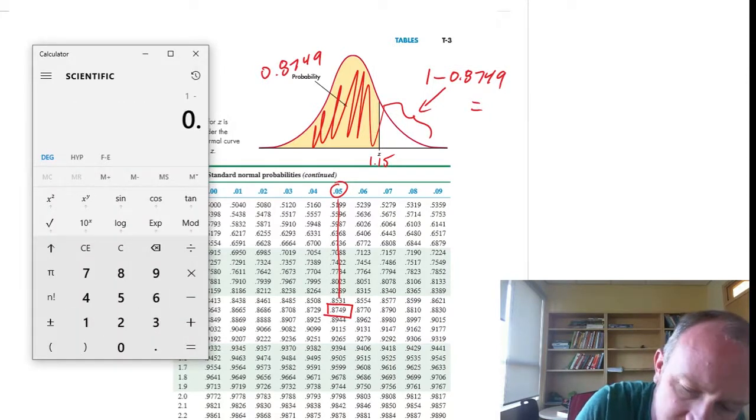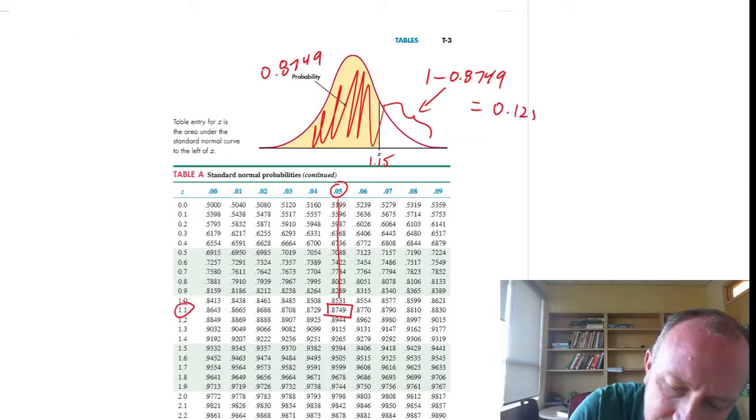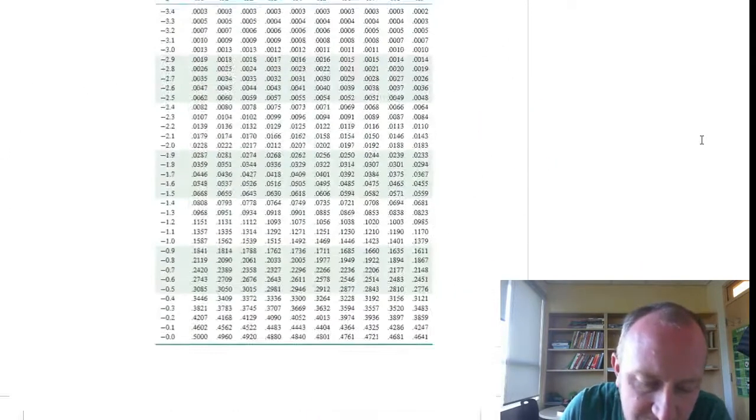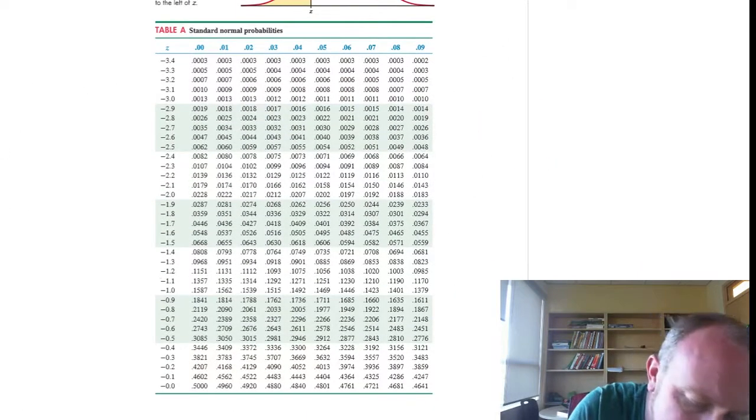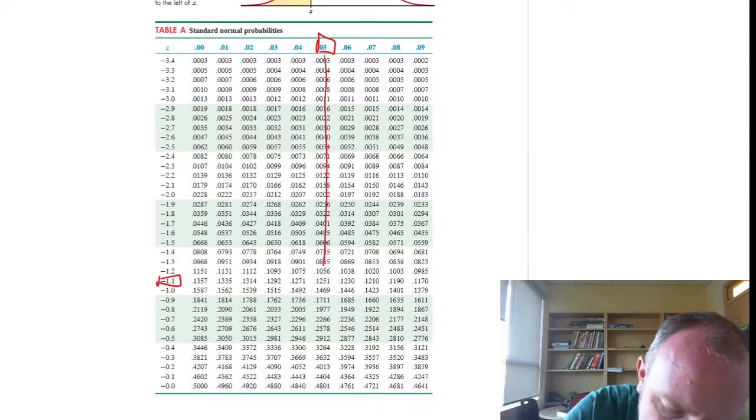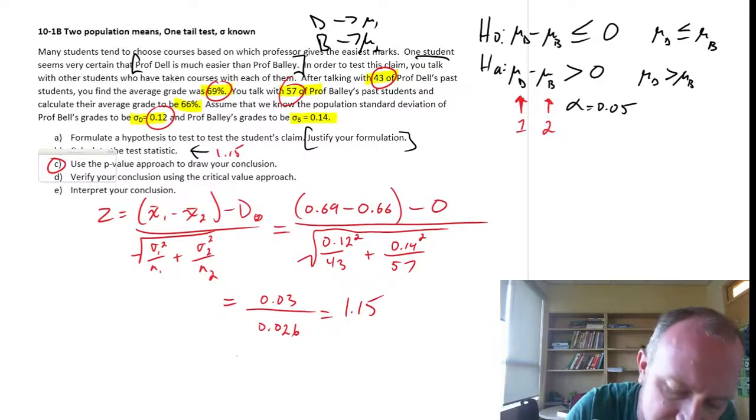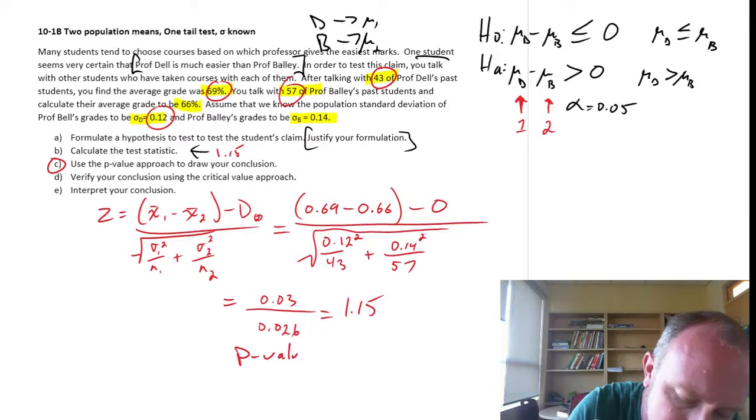1 minus 0.8749 equals 0.1251. Now just to be sure, we can go to the negative side. Negative 1.15. And there we go. 0.1251. We get exactly the same result. Either way you are comfortable doing it, that's fine. So our p-value for this test is 0.1251.